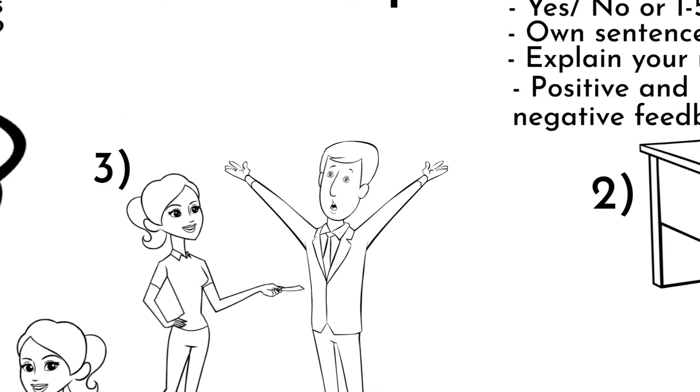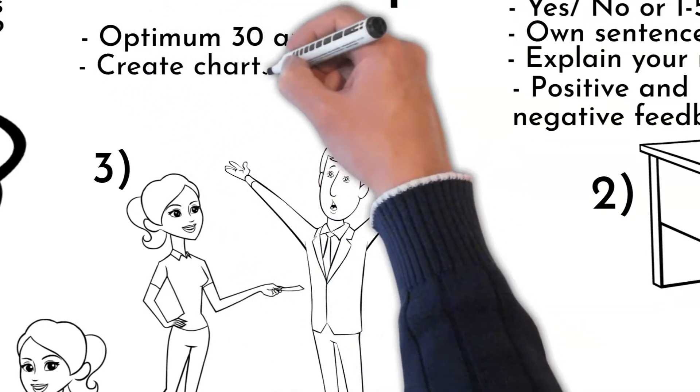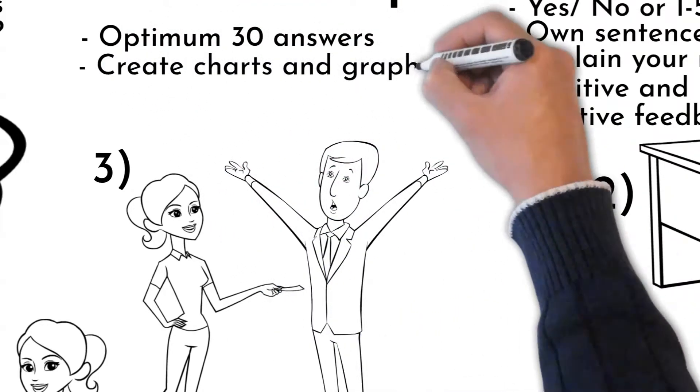To have valuable feedback, you need minimum 10 different answers but optimum 30. Try to visualize data on charts or graphs. Own worded answers must be transferred to key indicators. Express each sentence by two to three words.